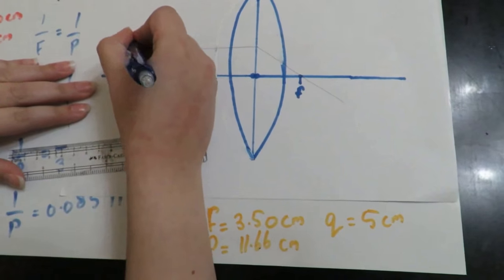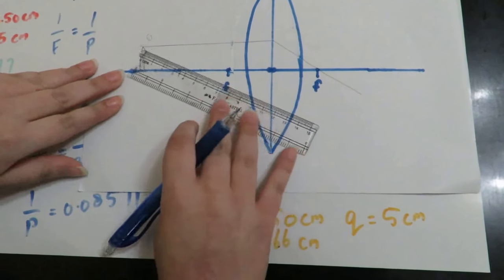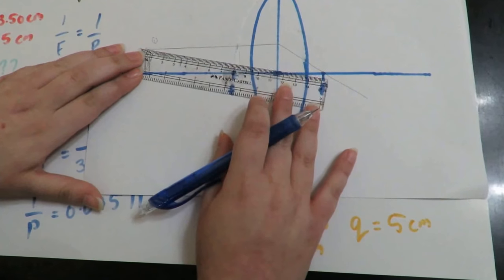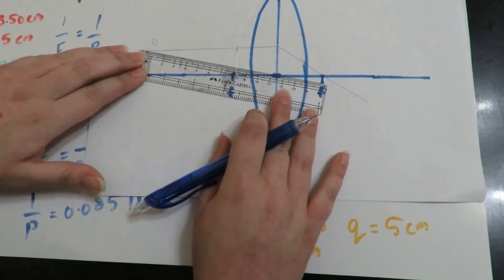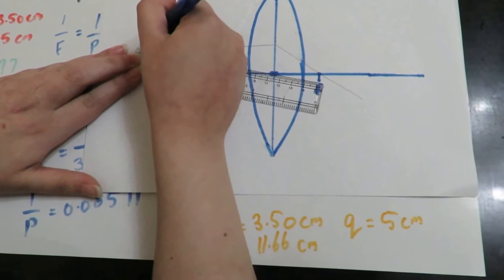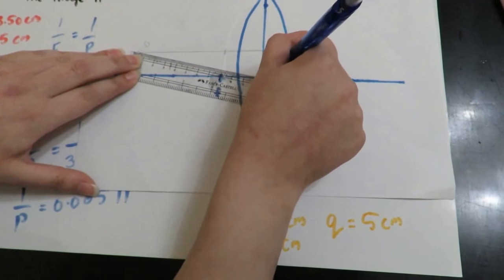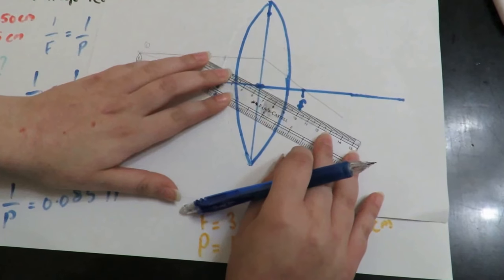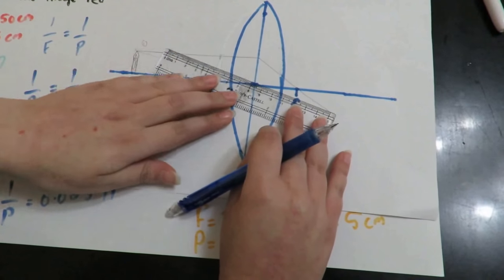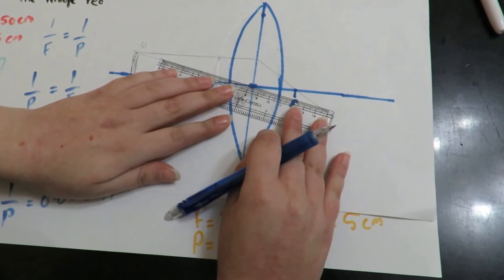And then the second one is the central ray. It is called the central ray because it passes through the center of the lens.